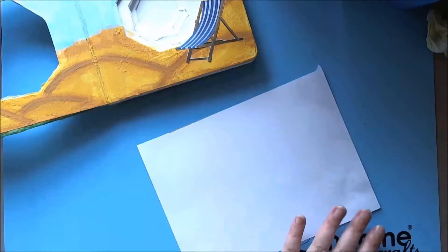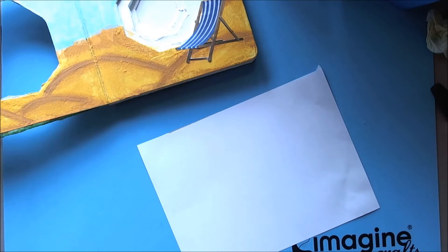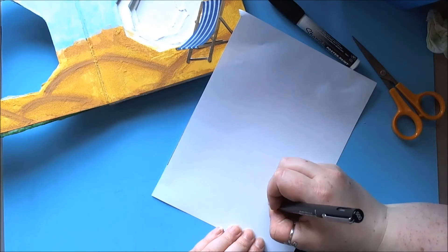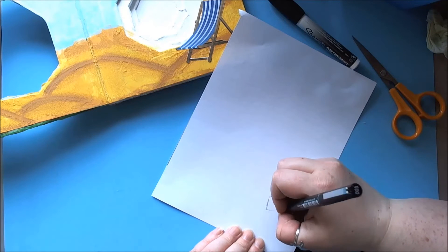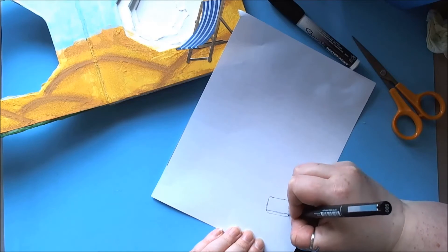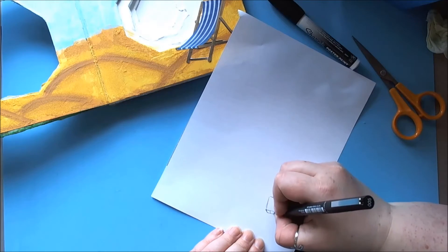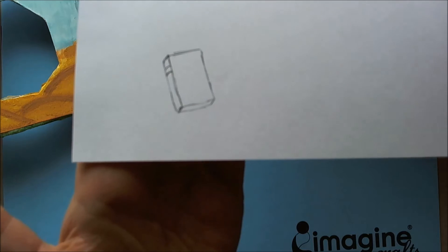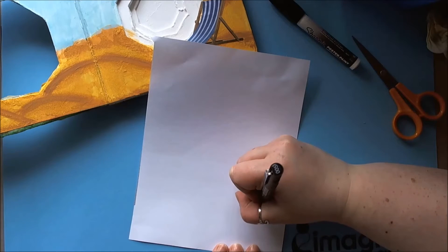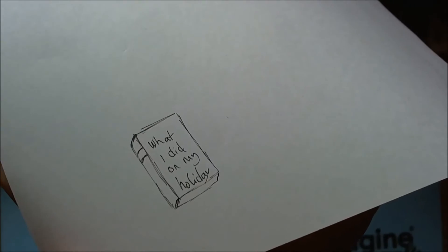If you didn't know where I was going before you should definitely know now because I am about to draw a little book. I'm just hand drawing it. It's only a square with a bit of diagonal lines and it's a book, really easy to draw. Then I'm going to write on the front of it the title of the book which is called 'What I did on my holiday.' Do you guess what book I'm doing yet?